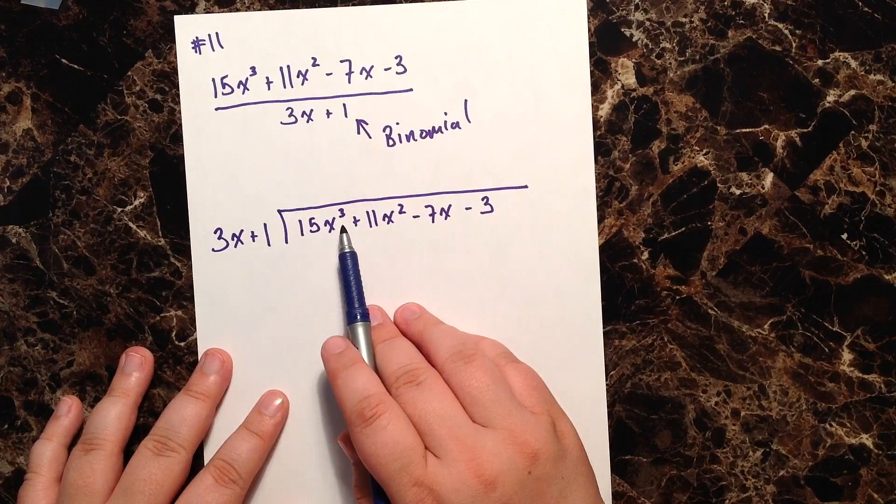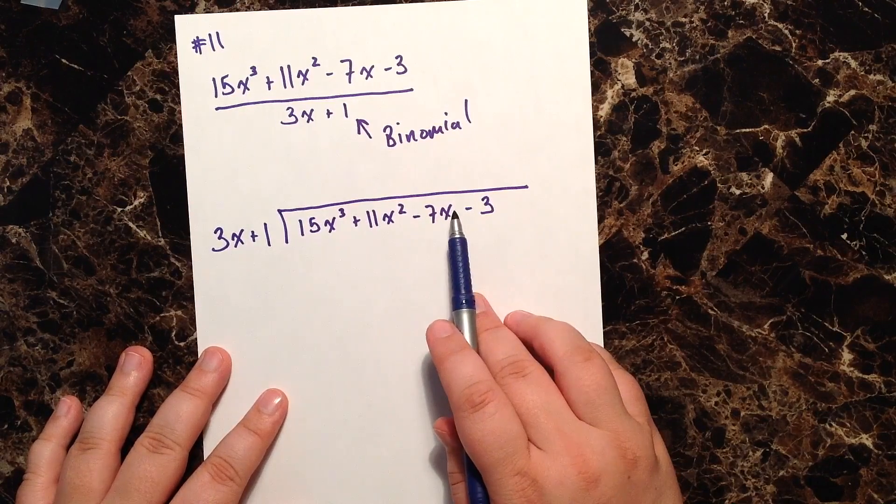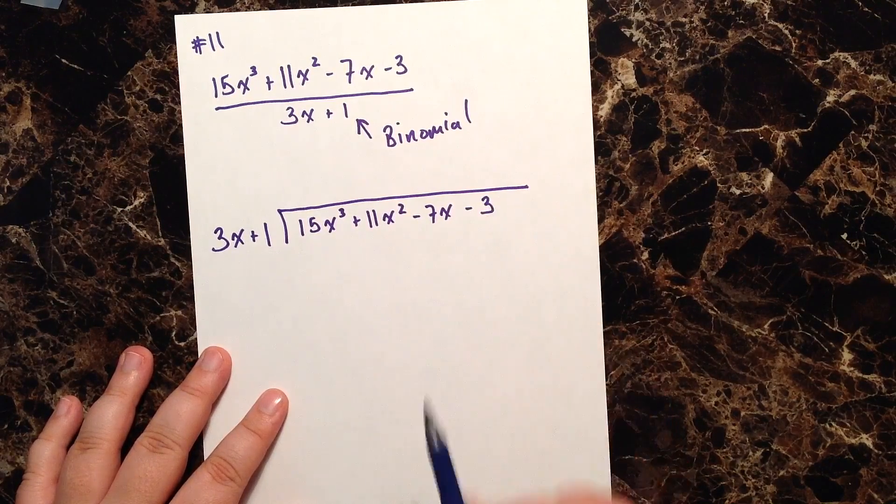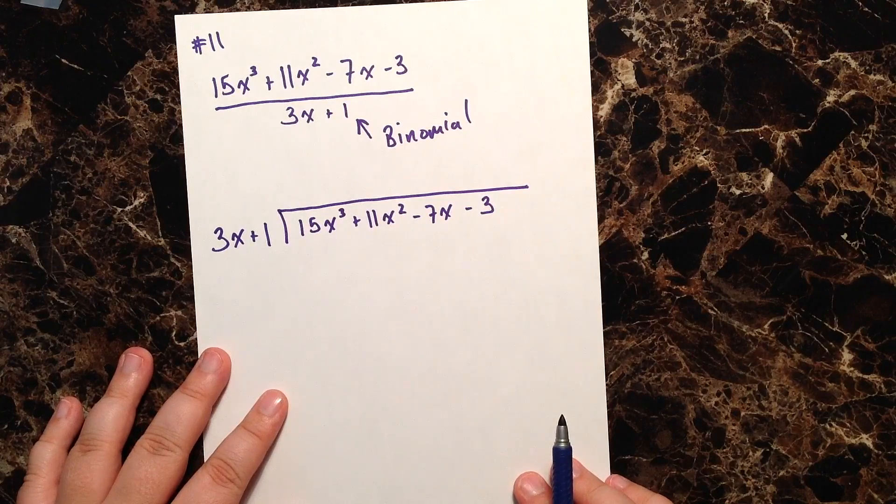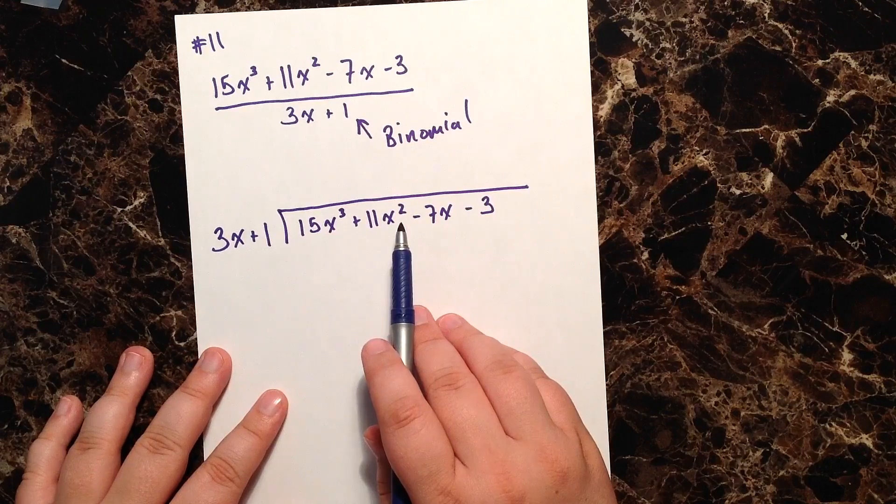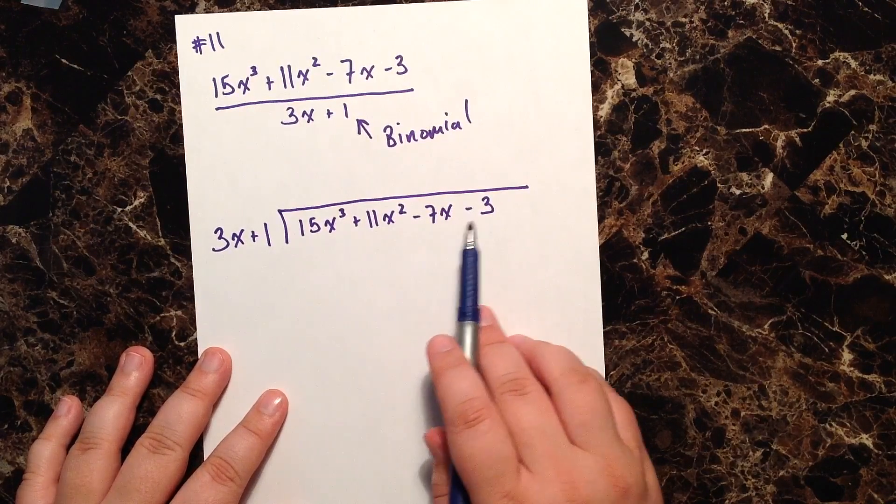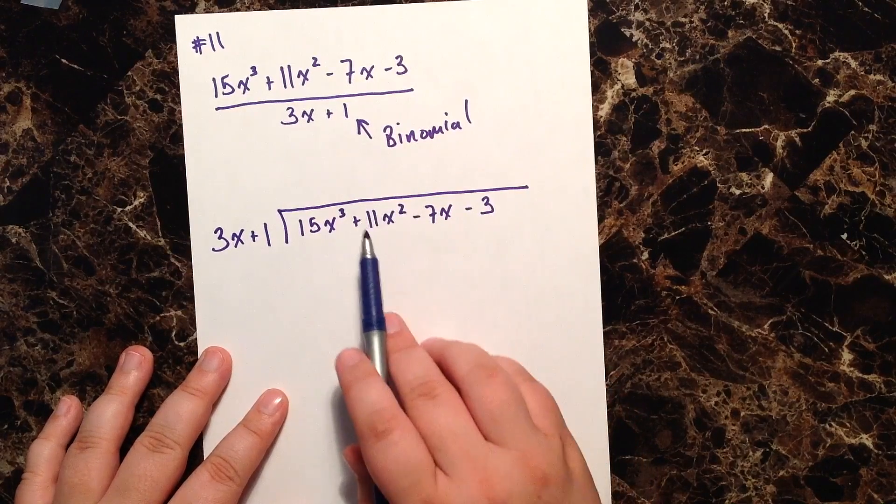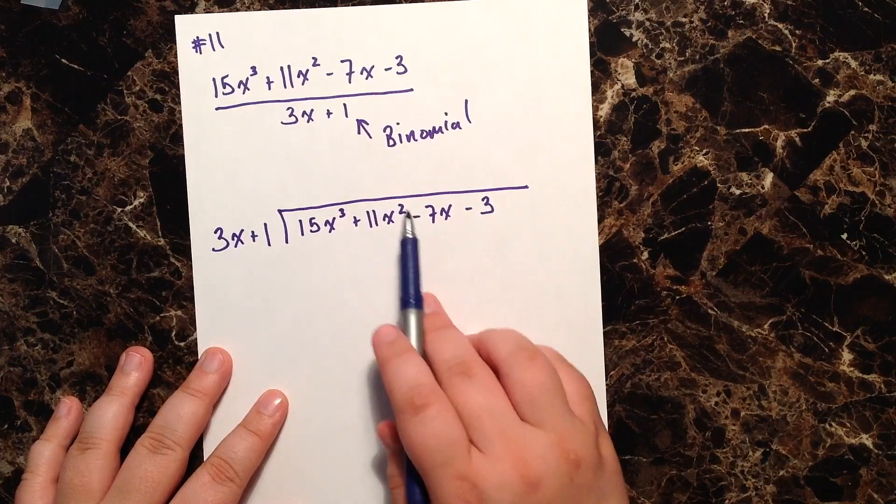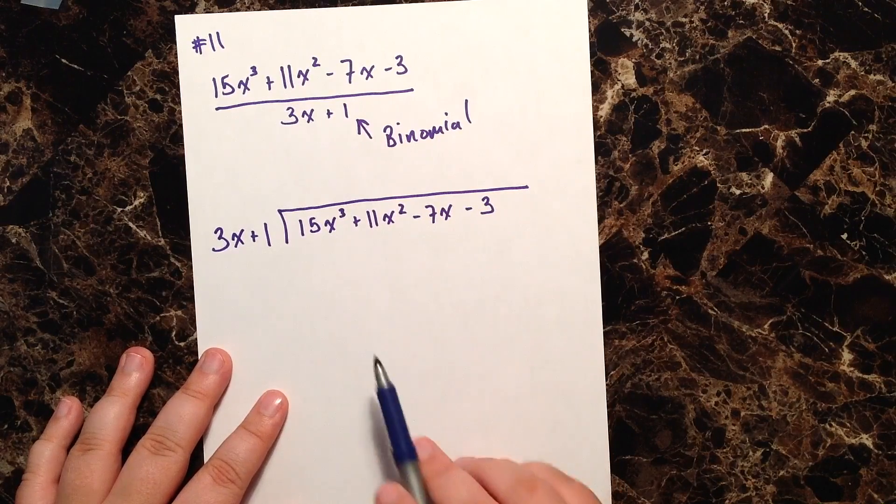What I mean by that is we go from three to two to one and then zero. If for whatever reason we were missing, let's say an x squared, and we went right from 15x to the third minus 7x minus 3, well we would have to physically remember to fill in our x squared with a zero x to the second, otherwise our math isn't going to work out.